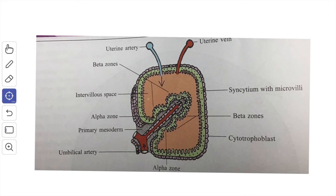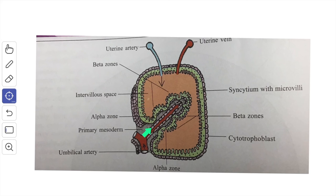The placental barrier consists of tissues which intervene between the fetal blood in the chorionic villi and the maternal blood in the intervillus space. Through this barrier, exchange of gaseous and metabolic products takes place between the fetus and the mother. Up to the third month of pregnancy, the barrier consists of four layers from fetus to mother: the endothelium of the fetal capillary resting on the basement membrane, then the core of primary mesodermal cells, then the basement membrane upon which rest cytotrophoblast and syncytiotrophoblast.